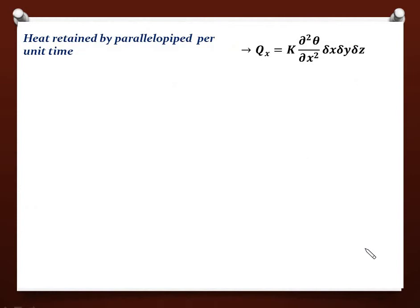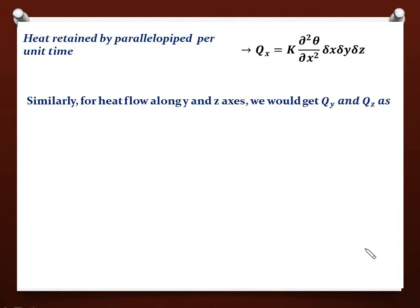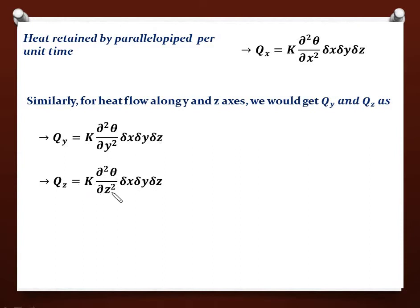Here Qx is the heat retained by the parallelepiped per unit time due to heat flow in the x-direction. In a similar manner, heat is also flowing in the y and z directions. The heat retained due to flow in the y-direction is Qy = k (∂²θ/∂y²) δx δy δz, and the heat retained due to flow in the z-direction is Qz = k (∂²θ/∂z²) δx δy δz.